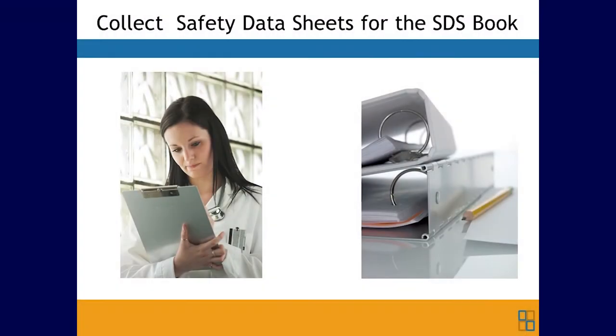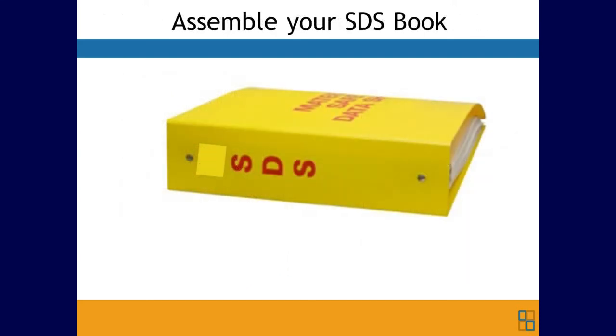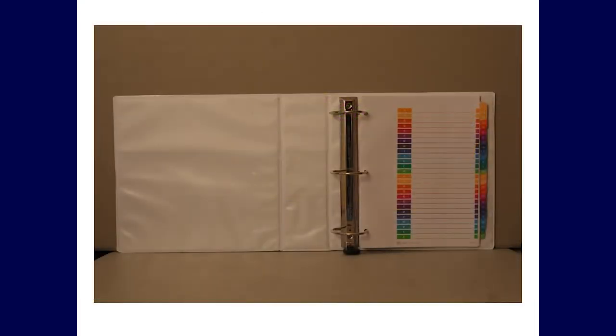The steps for creating your hazard communication program include training, understanding the label requirements, and collecting safety data sheets. Assemble your safety data sheet book as new products come into the office — I recommend a three-ring binder with hazardous chemicals filed in alphabetical order by product name.